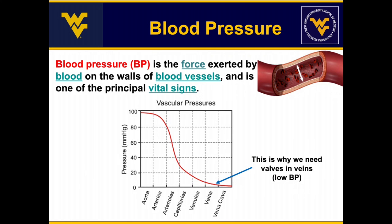Blood pressure also plays an important role. Blood pressure is defined as the force exerted by the blood on the walls of the vessel. The highest pressure is at the level of the aorta, and as blood moves away from the aorta through larger arteries, smaller arteries, and arterioles, the pressure decreases quite drastically. When blood gets into the veins, it is at very low pressure — this is why valves are needed in veins.